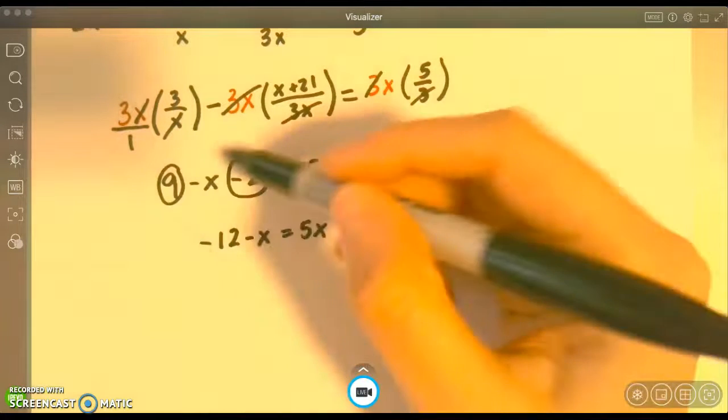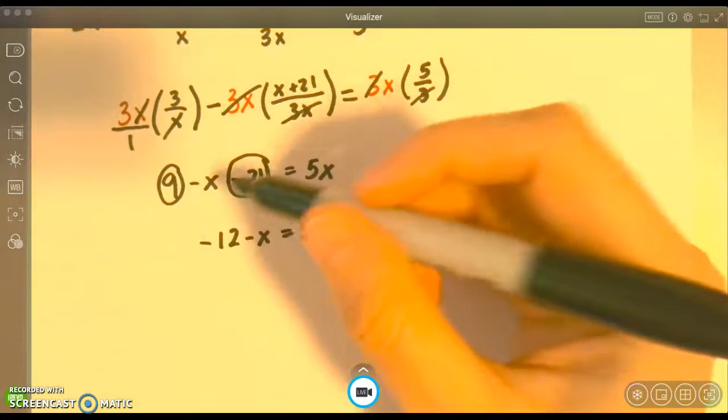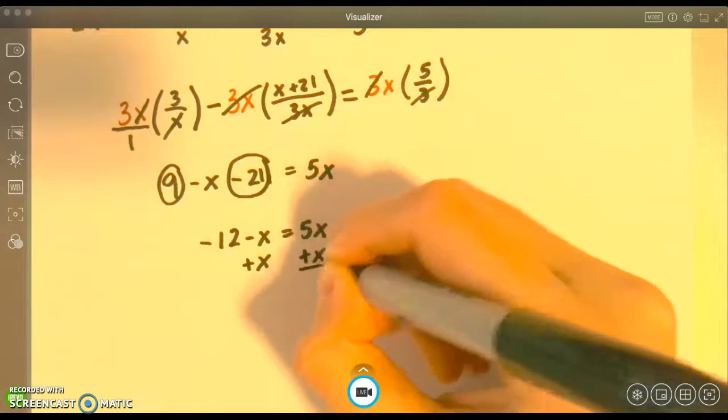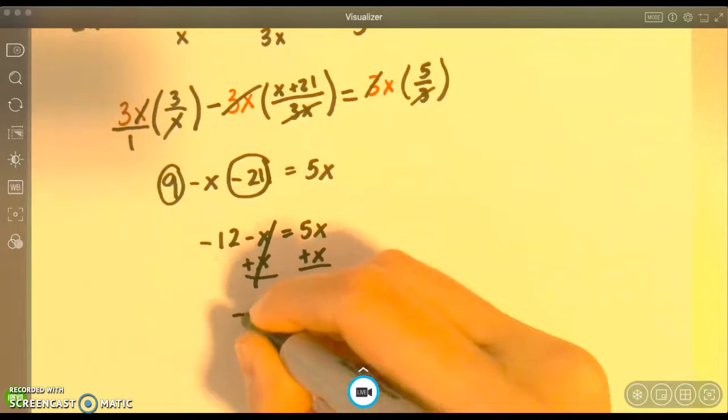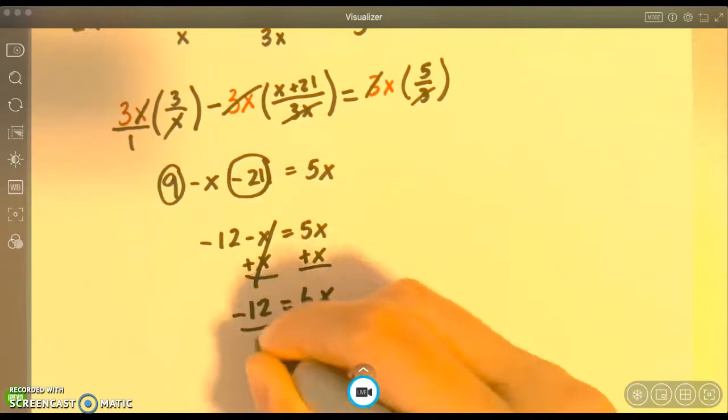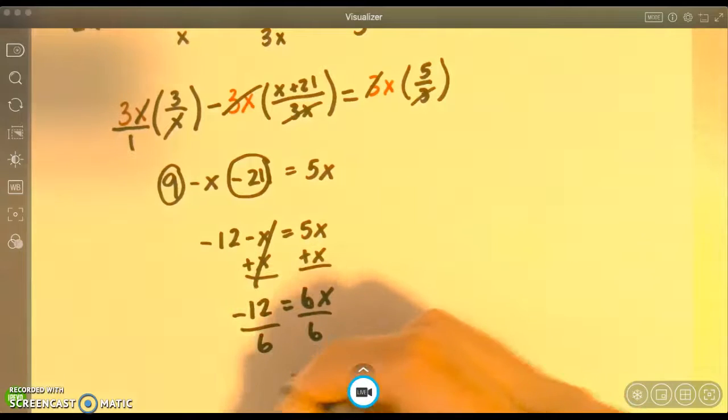I'm going to bring down my -x equals 5x. This is just algebra. Now I'm going to start solving. So I get -12 equals 6x. I'll divide by 6 on both sides, and I get x equals -2.